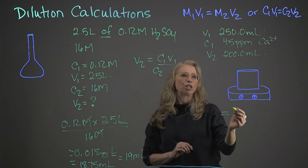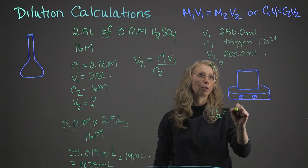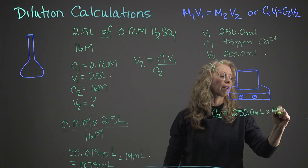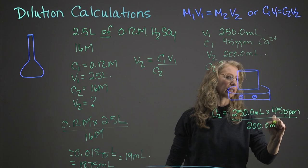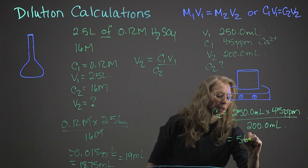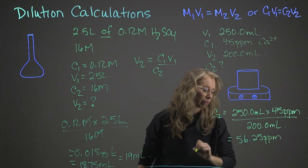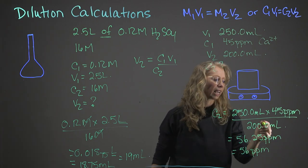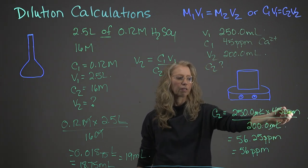If we finish off this calculation, what are we looking for? We're looking for C2. So we would rearrange this and C2 is going to equal 250.0 milliliters multiplied by 45 parts per million divided by 200.0 milliliters. And your final answer, if I do the calculation, I'll end up with 56.25 parts per million, sig figs, two sig figs, 56 parts per million. And again, my units in my volumes are going to cancel out and leave the parts per million units.